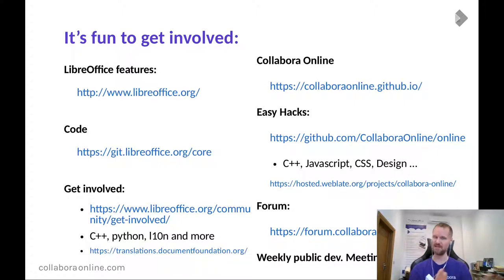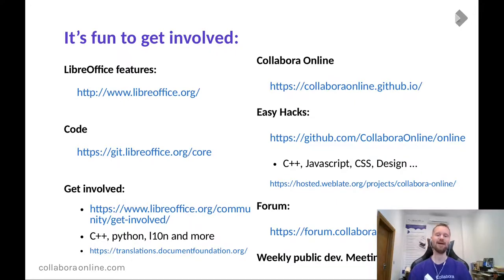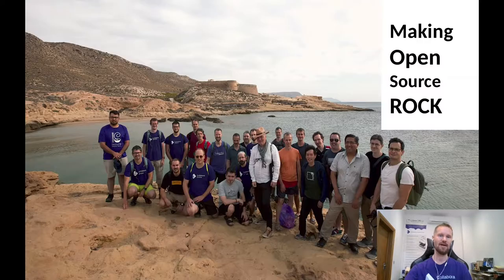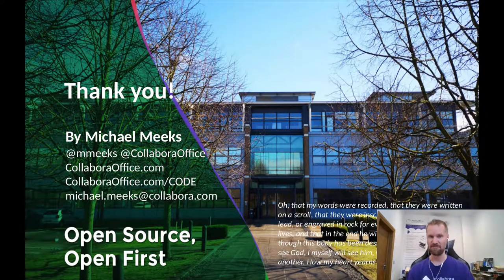It's fun to get involved! You can get involved in two ways: with LibreOffice — grab the core code, there are loads of cool things to do — or with Collabora Online on GitHub, where we have easy hacks in JavaScript, C++, and CSS. You can also translate via Weblate. We have a forum and weekly public development meetings every Thursday. Our mission is to make open source rock, focused on office productivity. Thank you for listening, and I'm really looking forward to seeing people in person when we can again.